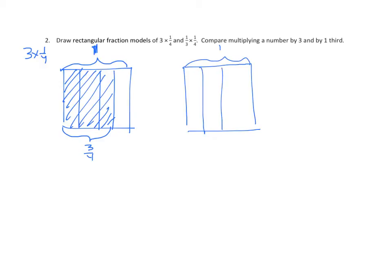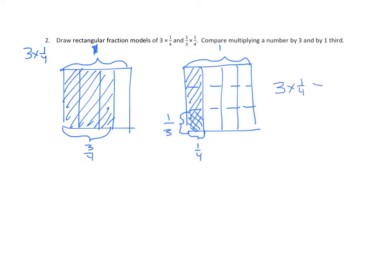Now we'll model one-third times one-fourth. Again, partition into four equal parts, shade one-fourth representing the second factor. Now partition into thirds going horizontally and double-shade. We can clearly see that the double-shaded portion of one-third times one-fourth is much smaller than the shaded portion of three times one-fourth. So three times one-fourth is greater than one-third times one-fourth.